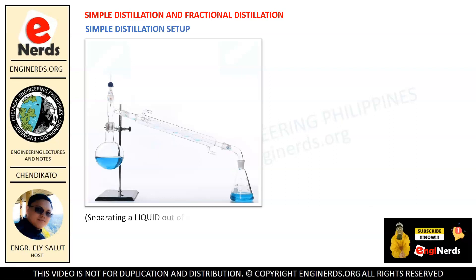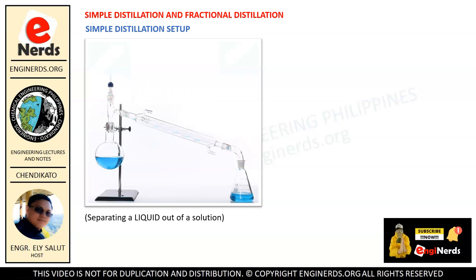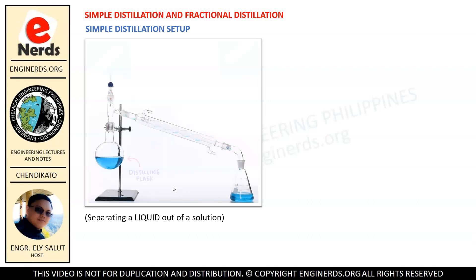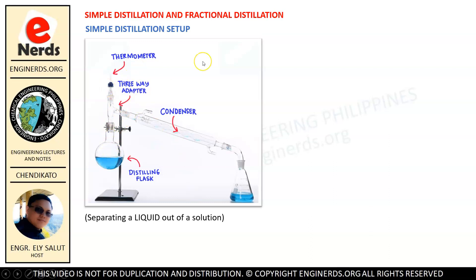Here is a setup of a simple distillation process. In a simple distillation process, we are separating a liquid out of a solution. So let us try to identify the parts. First, we have a distilling flask where our solution is contained. Then we have a thermometer to measure our temperature. We have a condenser in order to cool down the vapor, and a three-way adapter to connect our distilling flask, our condenser, and our thermometer.